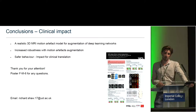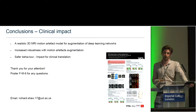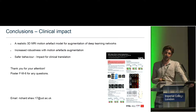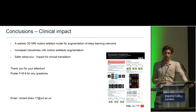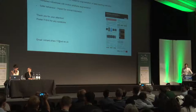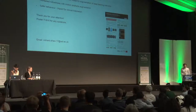In conclusion, we have presented a realistic 3D MRI motion artifact model for training neural networks. We have shown increased robustness to real-world motion artifacts, and this leads to generally safer model behavior, which is important for the clinical translation of such techniques. Thank you, and please come and see my poster this afternoon.